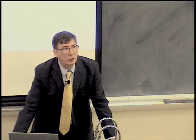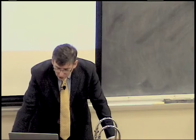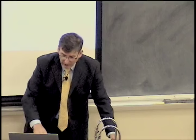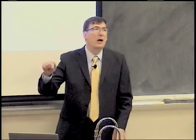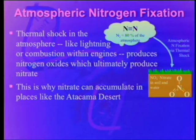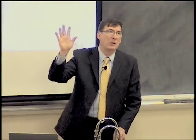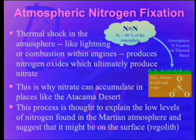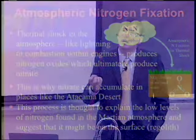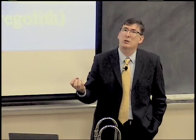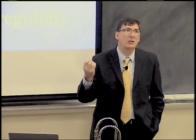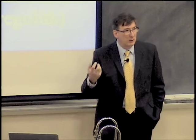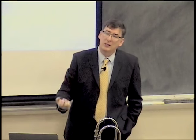This process is thought to explain the low levels of nitrogen in the Martian atmosphere and suggests that nitrate might be on the surface of Mars. This is one of the big mysteries — why is there so little nitrogen in the atmosphere of Mars? Probably because there's no nitrogen cycle, and there is thermal shock in the atmosphere. Various things happen up there and as a consequence the nitrogen that should be there is actually precipitated on the surface.